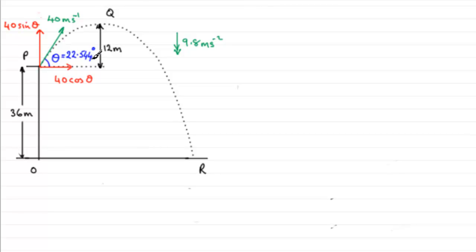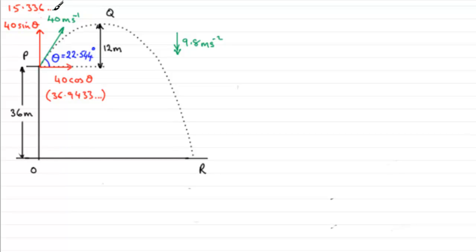Using the angle theta = 22.544° worked out in the previous part, we can update the horizontal and vertical velocity components. 40 times cos(22.544°) gives a horizontal speed of 36.9433 m/s, and 40 times sin(22.544°) gives a vertical speed of 15.336 m/s.